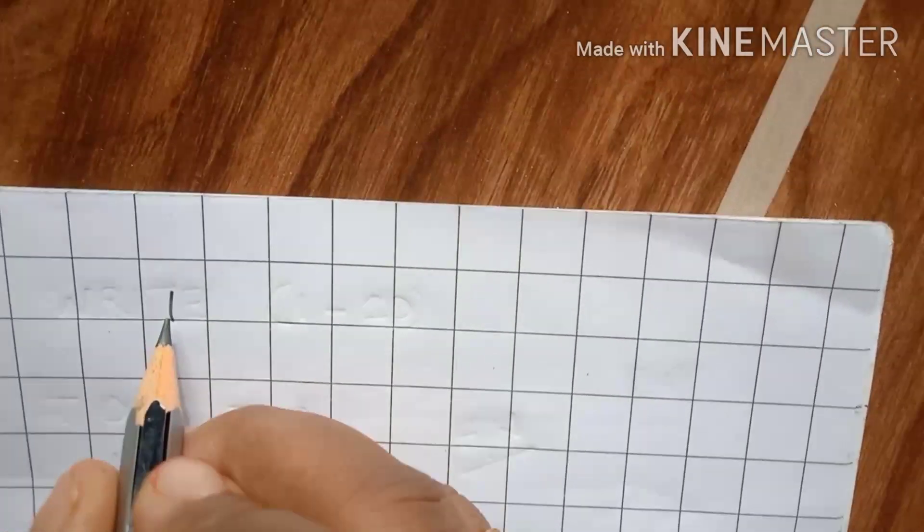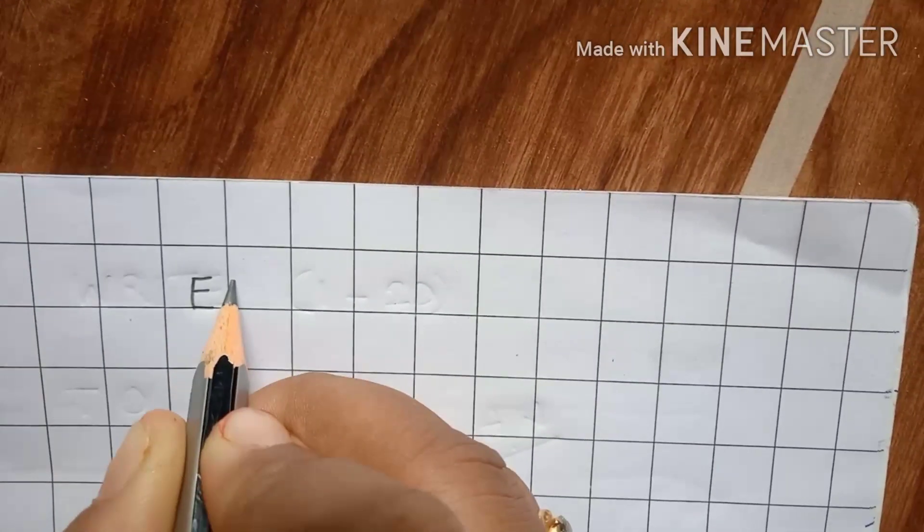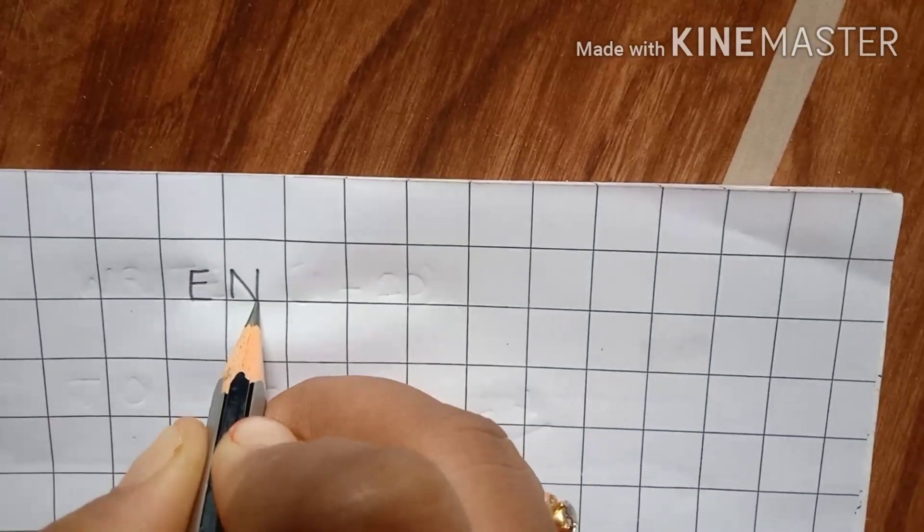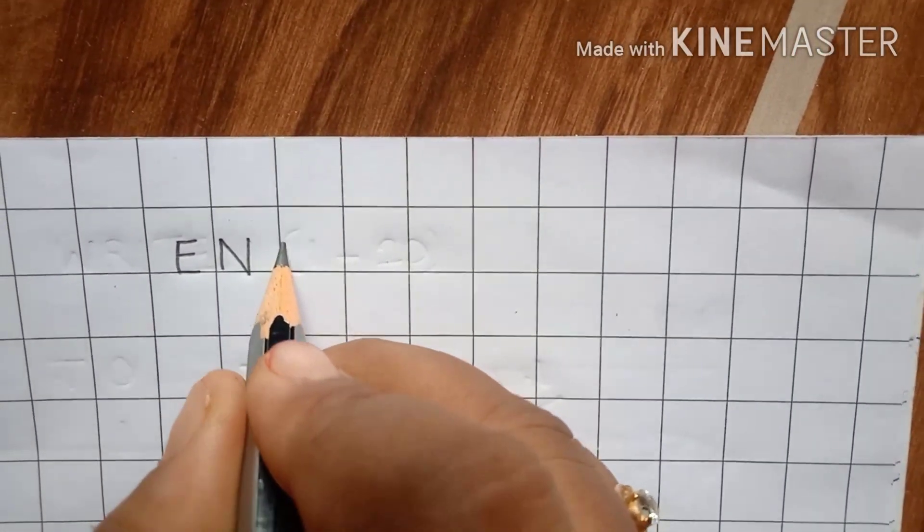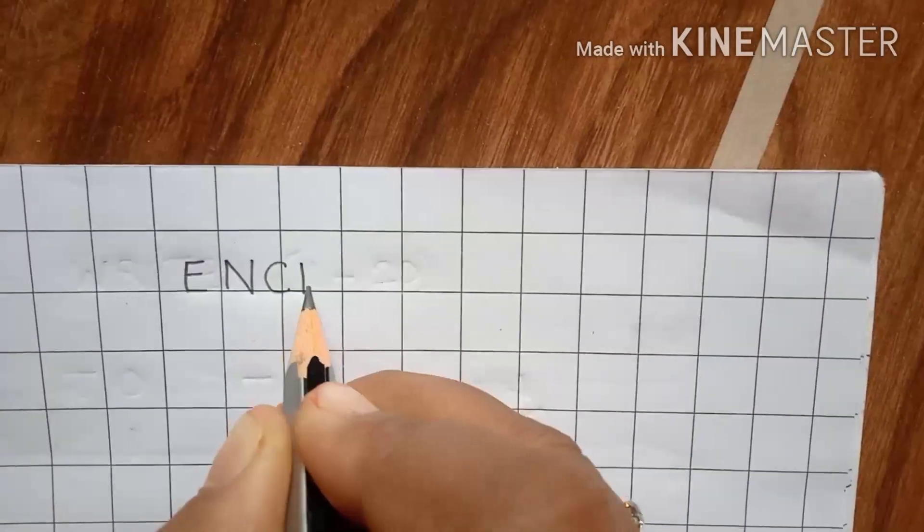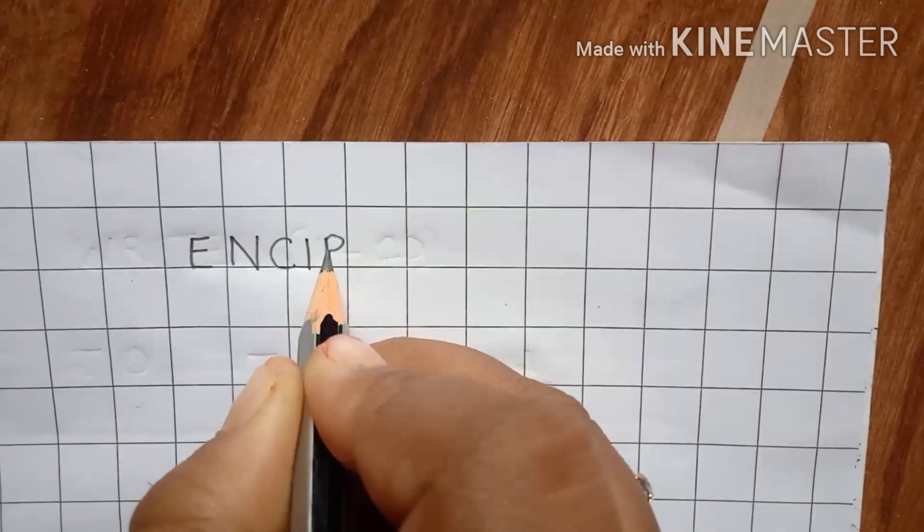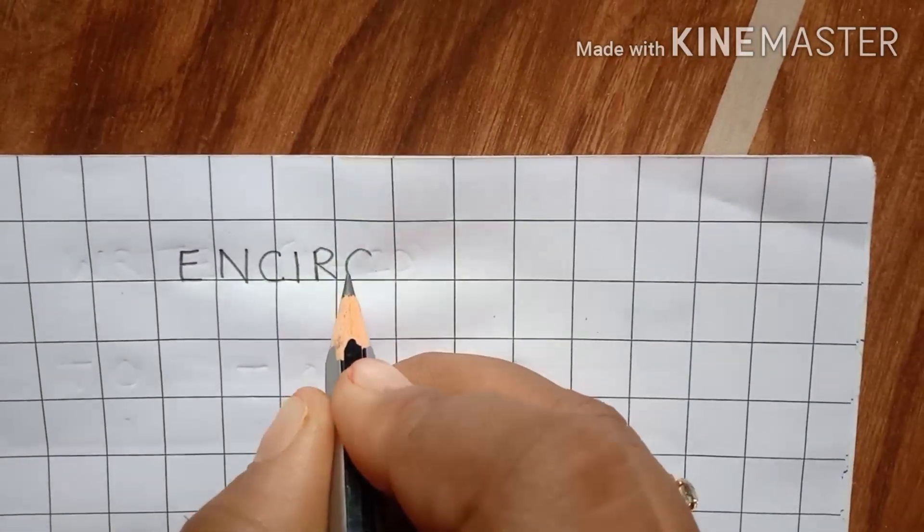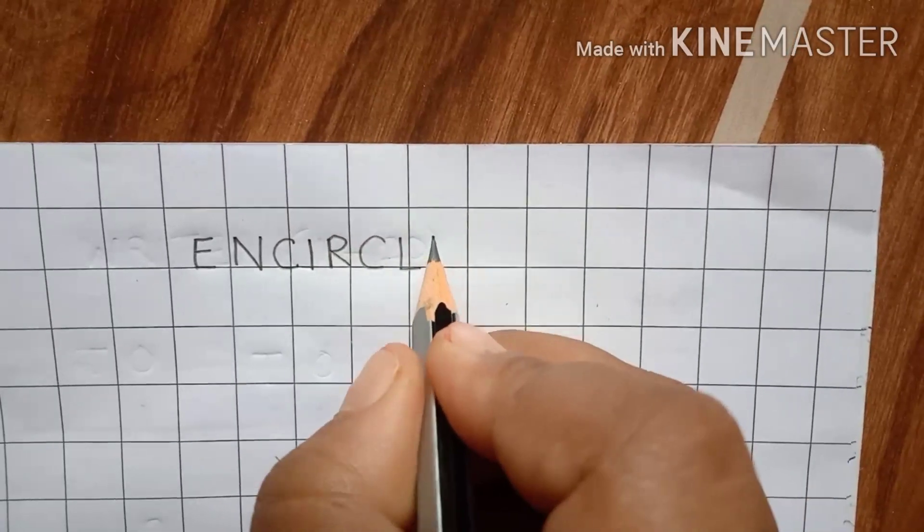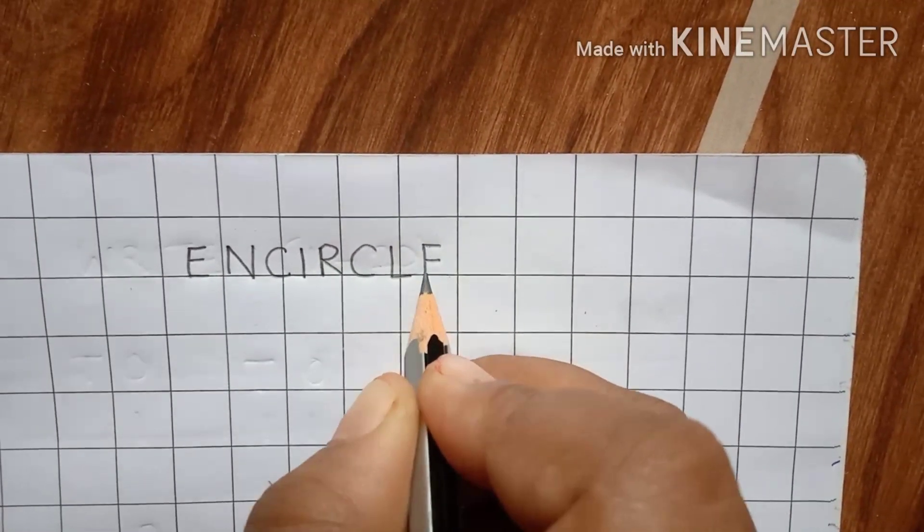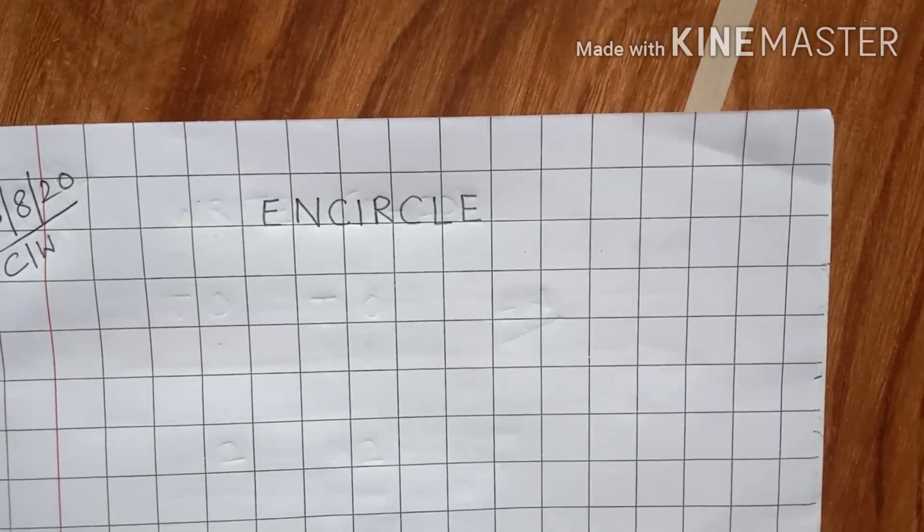On the top, write encircle. E, N, C, I, R, C, L, E. Encircle. Fine?